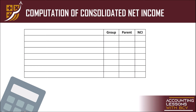So let's start with the computation of consolidated net income. Makikita nyo, meron tayong tatlong columns: for the group, for the parent, and non-controlling interest. Ang atake natin dito — uunahin natin yung group muna. How do we compute consolidated net income? Ang ibig sabihin ng consolidate ay combining. Therefore, the starting point of the computation of the consolidated net income ay ipagpokombine mo yung net income ni parent at net income ni subsidiary.